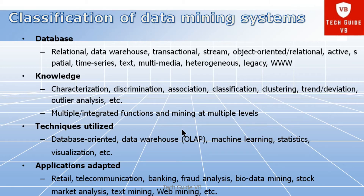The next classification is based on the knowledge database, which includes characterization, discrimination, association, classification, clustering, trend, deviation, and outlier analysis. These concepts were covered in the previous session on data mining functionalities. Multiple or integrated functions and mining at multiple levels are done in this knowledge category.